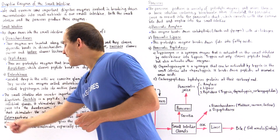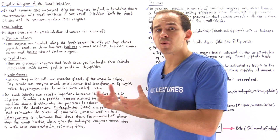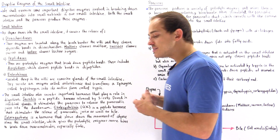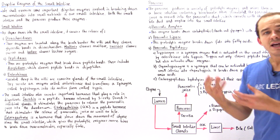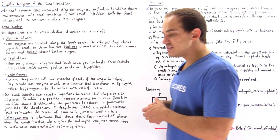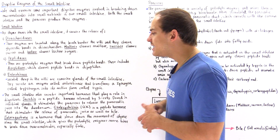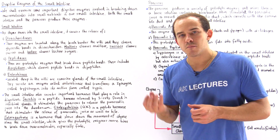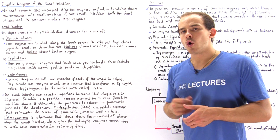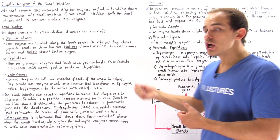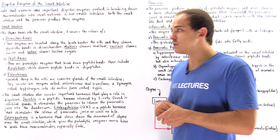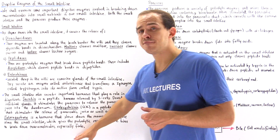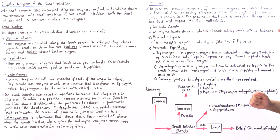Finally, we have another hormone involved in the breakdown of fat known as enterogastrone. Enterogastrone is stimulated by the presence of fat and lipids inside the small intestine. What enterogastrone does is cause a decrease in the movement of the chyme along the small intestine, giving lipase and other proteolytic enzymes more time to break down macromolecules, especially fats and lipids.